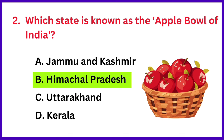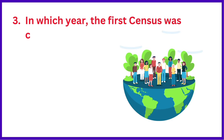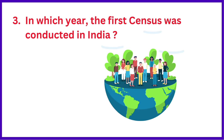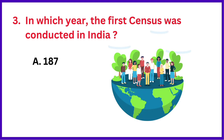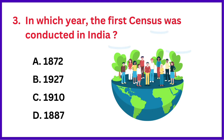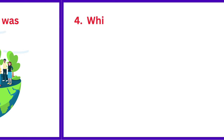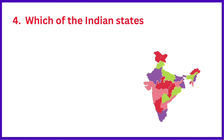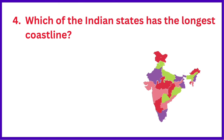The right answer is option B: Himachal Pradesh. In which year was the first census conducted in India? The right answer is option A: 1872. Which of the following Indian states has the longest coastline?